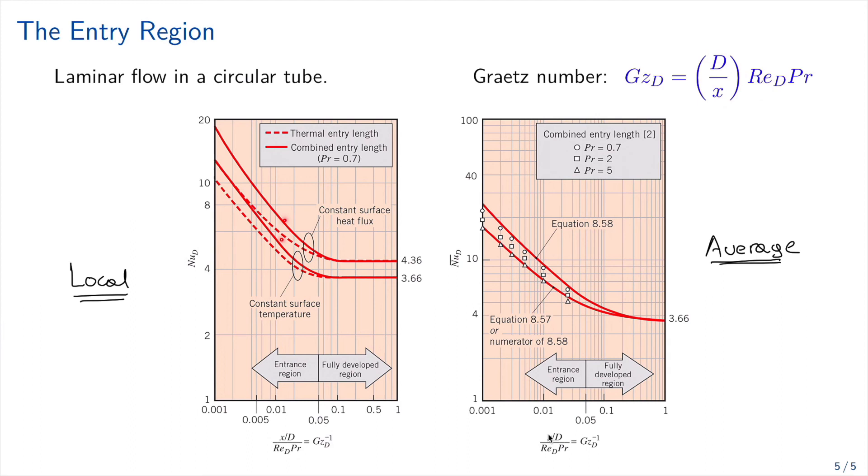Two of them corresponds to the combined entry regions, for Prandtls approximately equal to seven. And the dashed lines are going to be for thermal entry length. So for thermal, we have these two cases, and for combined, the solid lines.